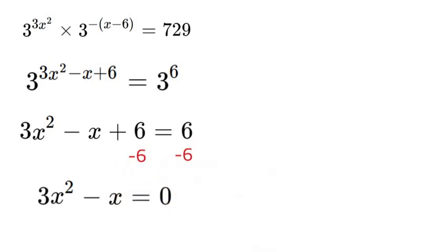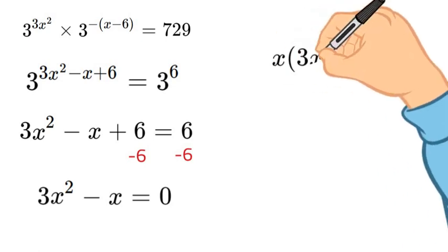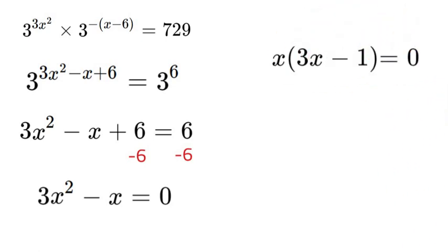Now we can factor out an x. And then to make this equation equal to 0 we just need either the x to be equal to 0 or the part 3x minus 1 to be equal to 0.